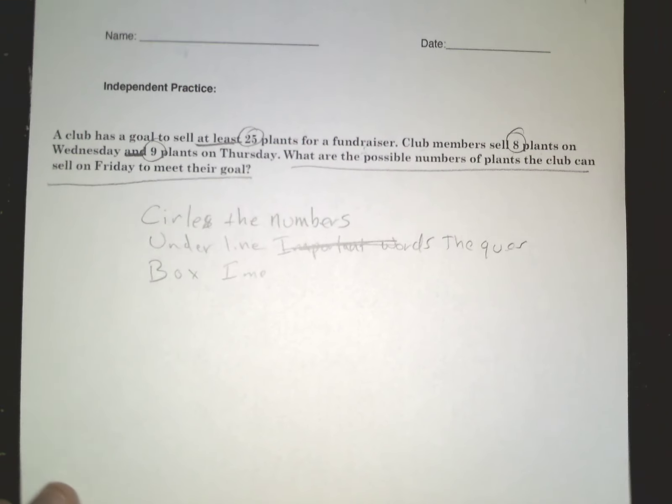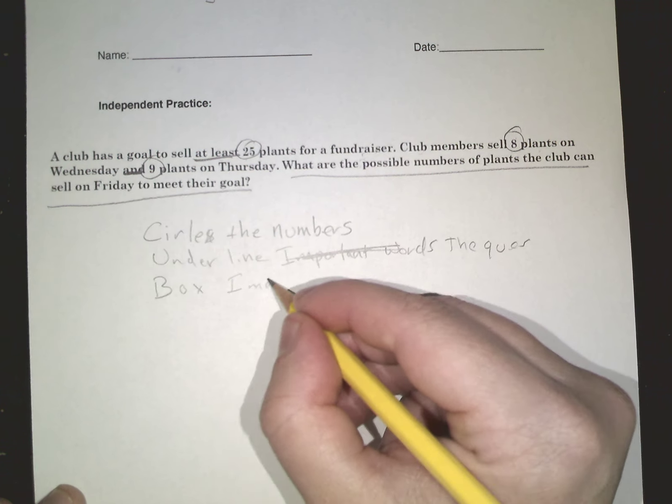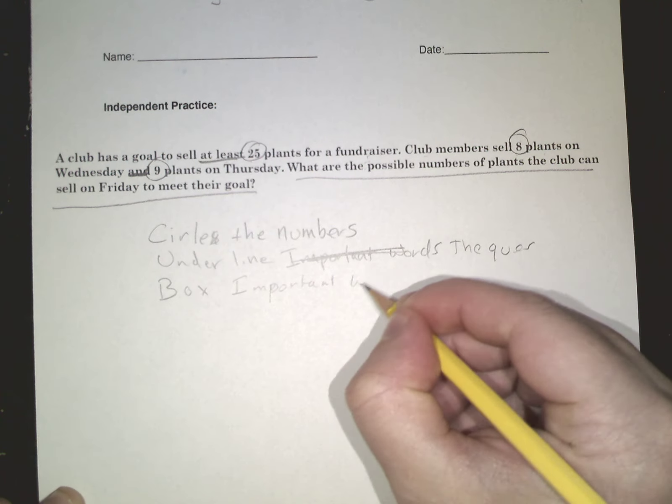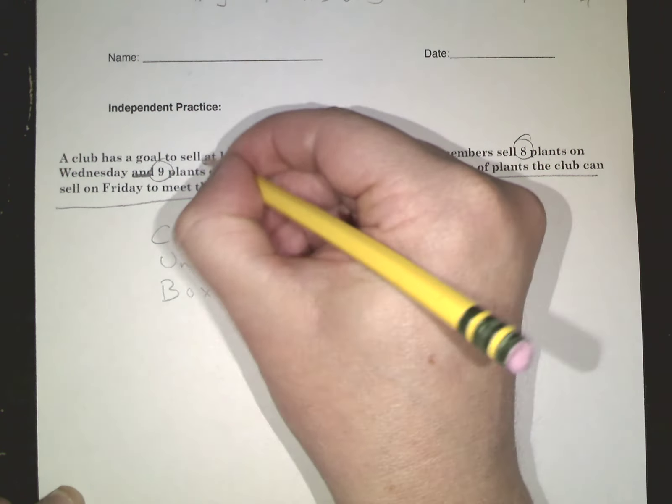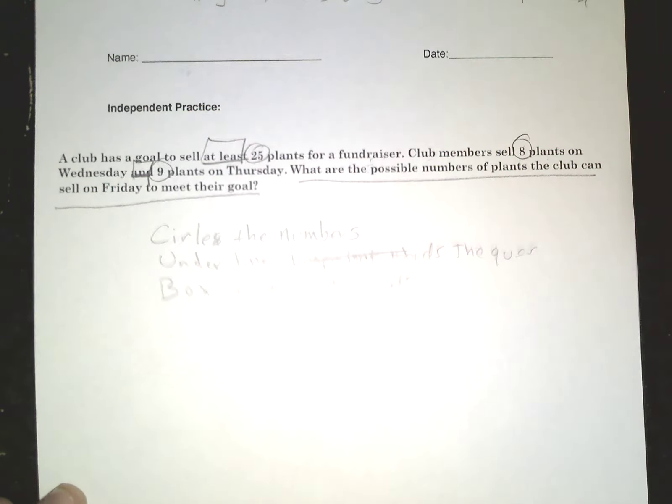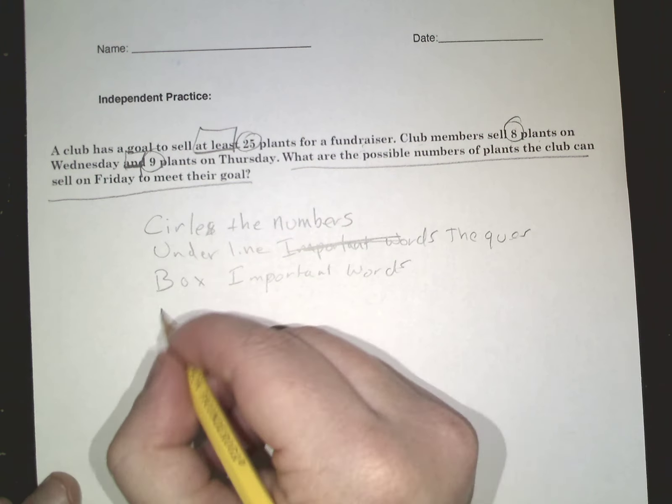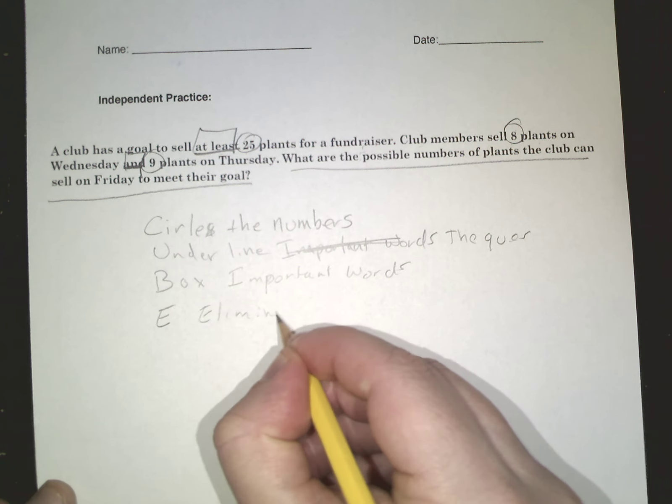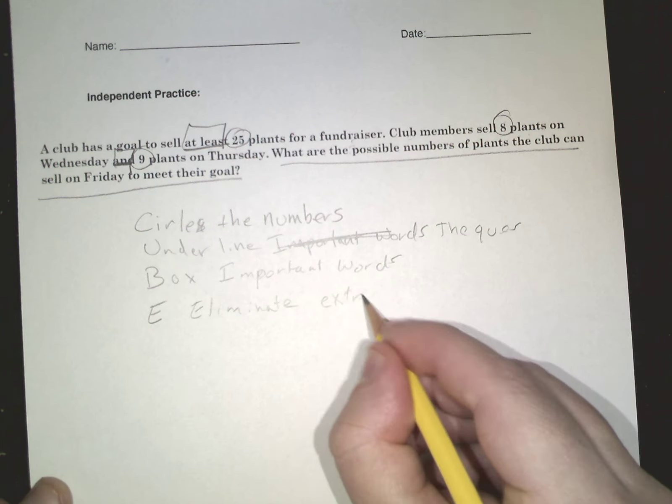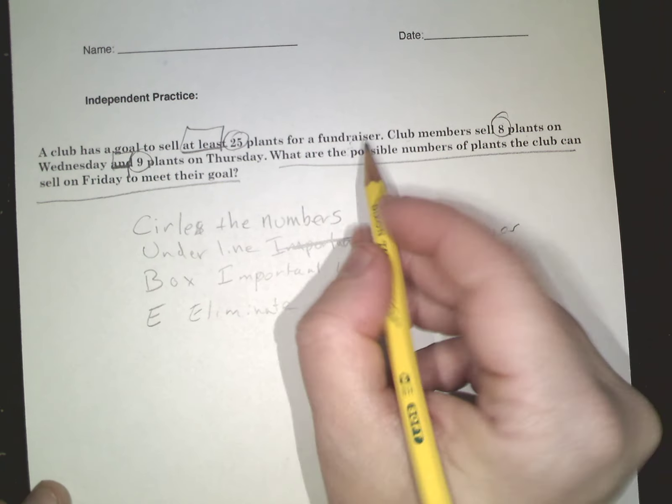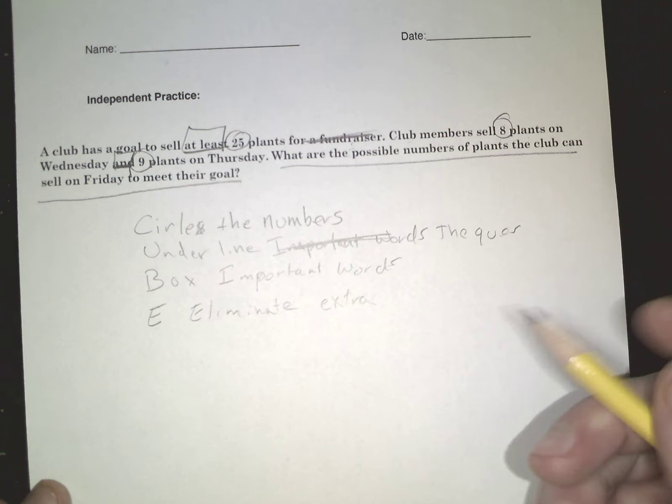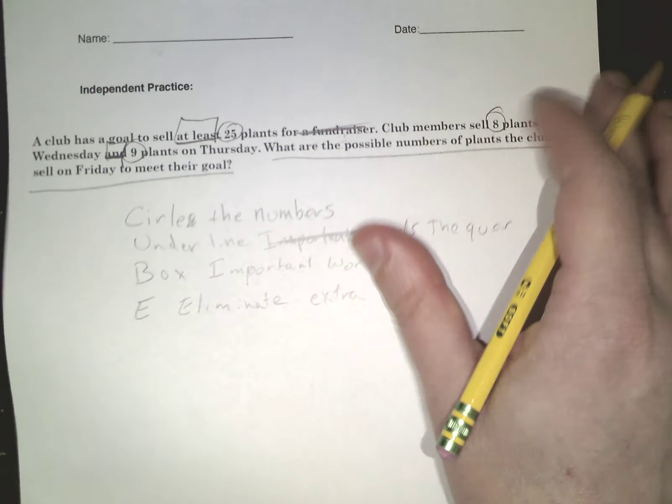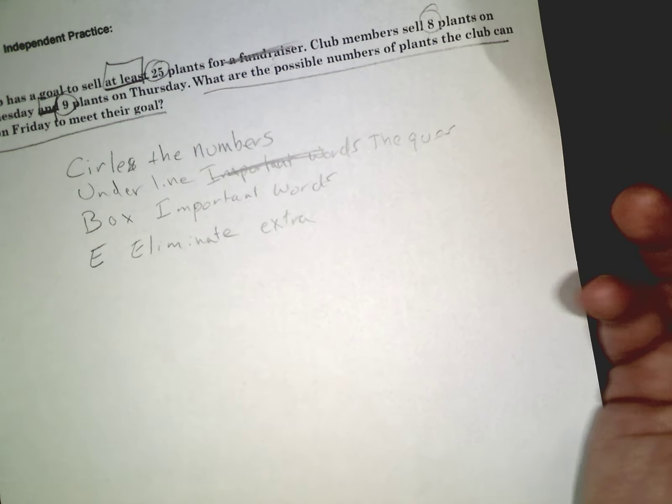Box important words. We did important words, I'm rusty. So wherever I see this I'm going to change, use the boxes. E: eliminate extra information. Do we have to know that they're selling it for a fundraiser? Not really, right? They want to sell plants, 25 plants. Does it matter what they're selling it for, pizza party?